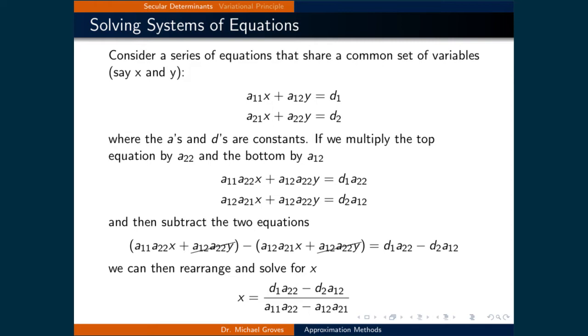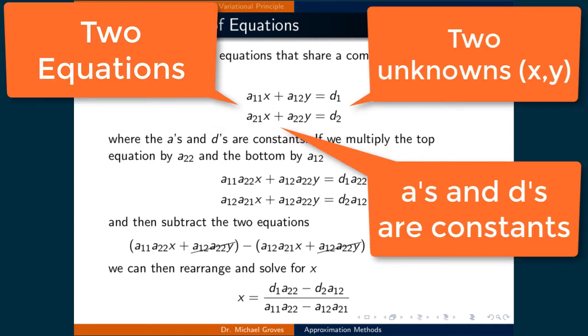Consider a series of equations that share a common set of variables: a11 times x plus a12 times y equals d1, and a21 times x plus a22 times y equals d2. The a's and d's are constants. We have two unknowns, x and y, and two equations, so we can solve for them.